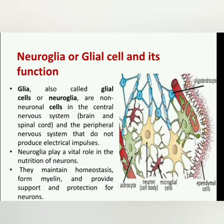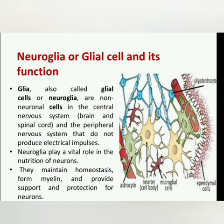Next are neuroglia, or glial cells. These are non-neuronal cells present in large amounts in the central nervous system — in the brain and spinal cord. They do not produce electrical impulses, but they play a very important role in homeostasis, maintaining it, forming the myelin sheath around neuron axons, and providing support and protection to neurons.